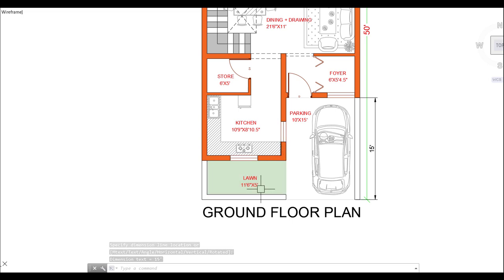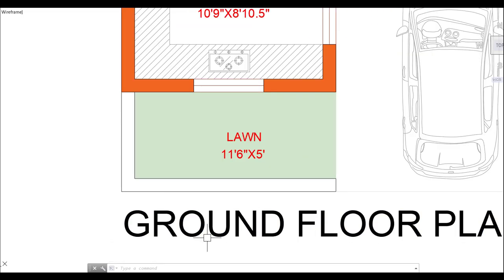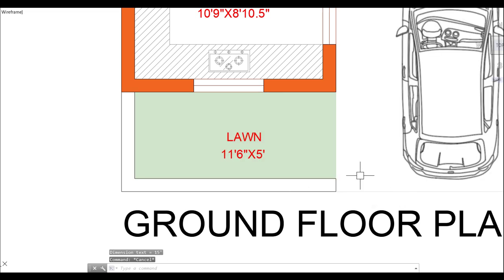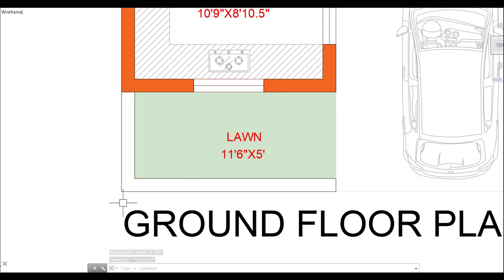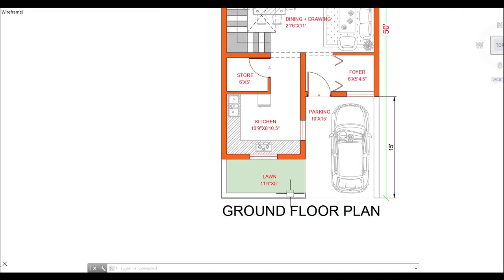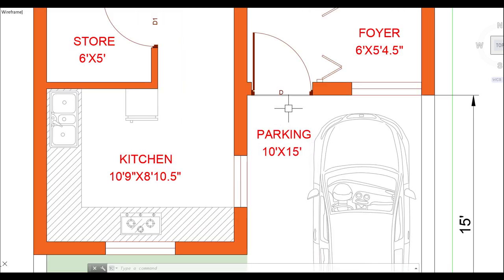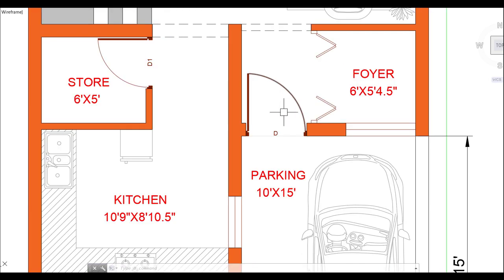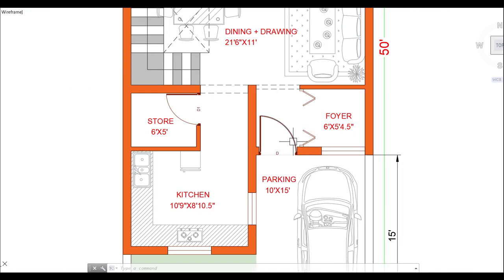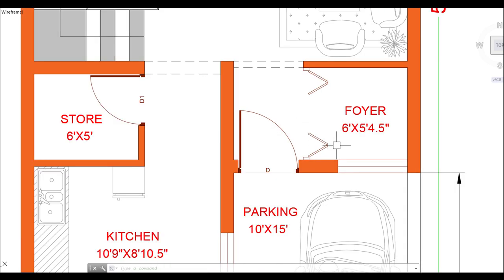I have added a lawn which is 11 feet 6 inches by 5 feet. As you can see the parking area, you will also find a door which is 3 feet 6 inches wide. When you open that door, you will enter the sit-out area.